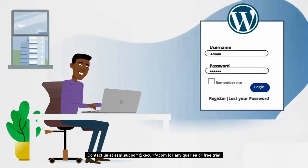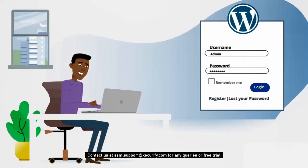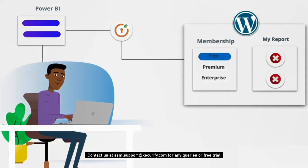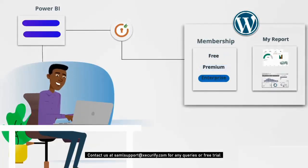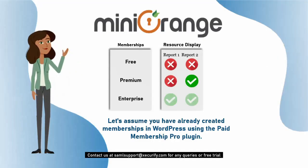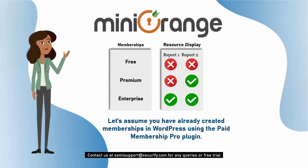First, log in to your WordPress admin account. In this business case, let's say you have analytics or reports that you want to display to only specific WordPress users with certain memberships. We've already created the memberships in WordPress using the Paid Membership Pro plugin.